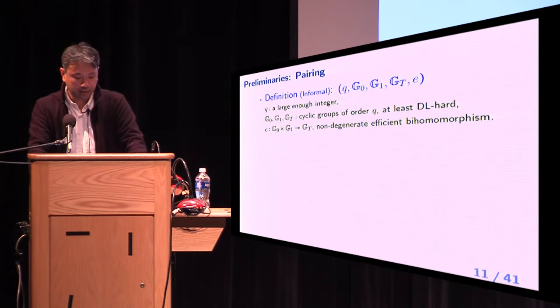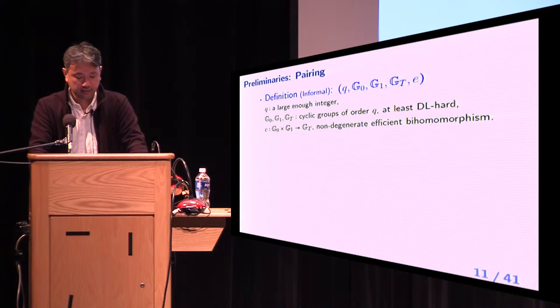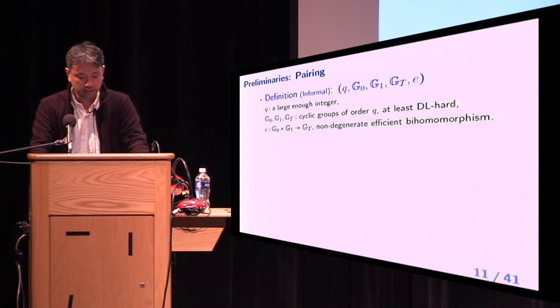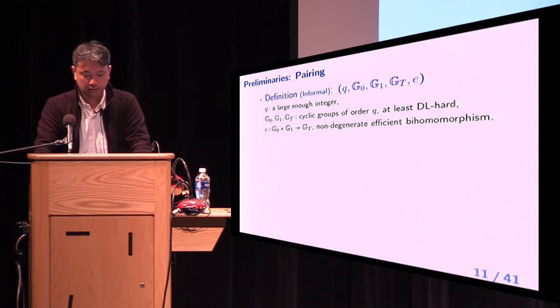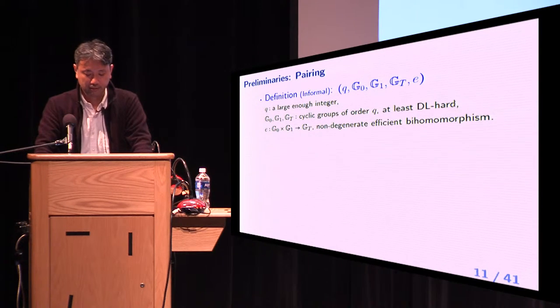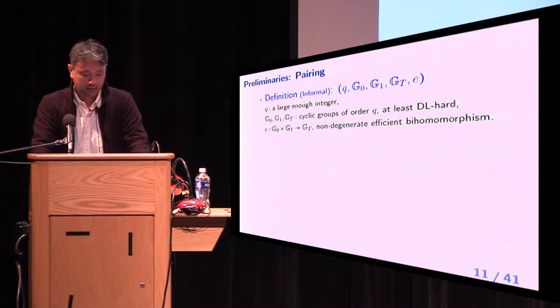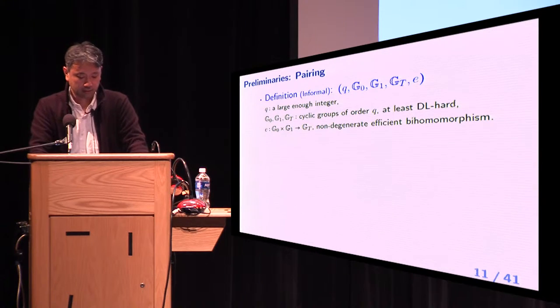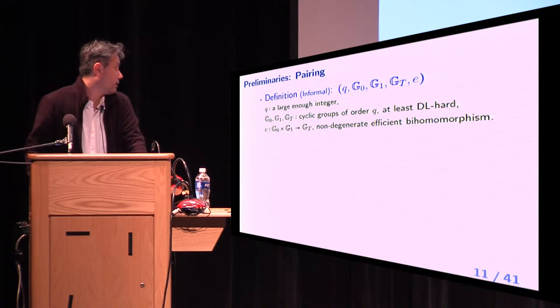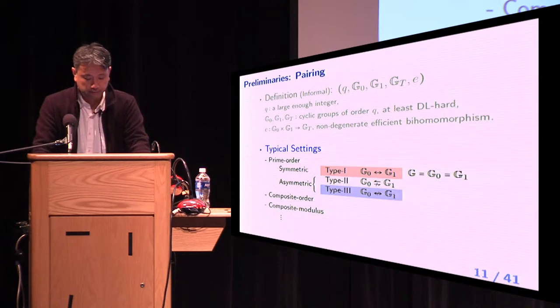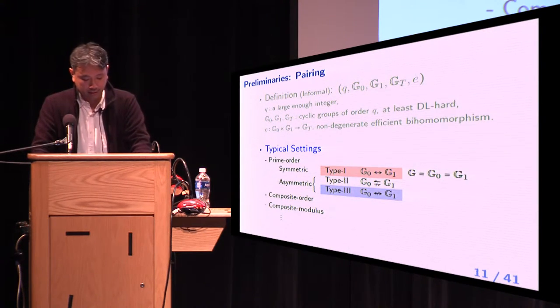Informally, pairing is defined by the tuple of q, G0, G1, GT, and e. q is a large enough integer. G0, G1, GT are cyclic groups of order q. e is non-degenerate efficient bilinear homomorphism. G0 and G1 are called source groups. GT is called target group.